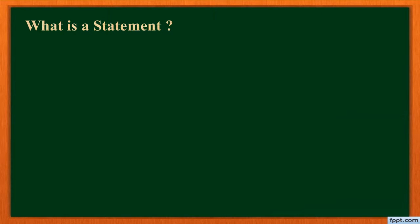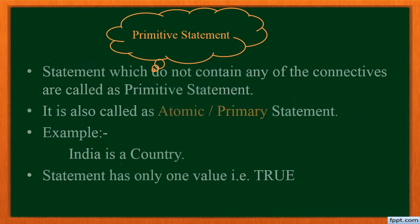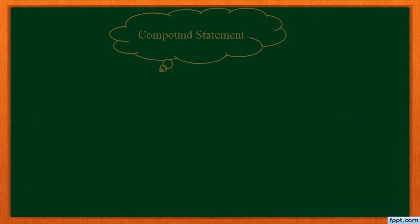Friends, what is a statement? A statement is a basic unit of our object language. A statement can be primitive as well as composite. A statement has only two possible outcomes — either true or false. A primitive statement is one which is not a compound statement.